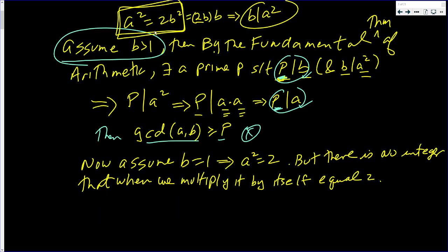So when we assume b was bigger than 1, we got a contradiction. When we have that b equals 1, a doesn't exist. So that's another contradiction.